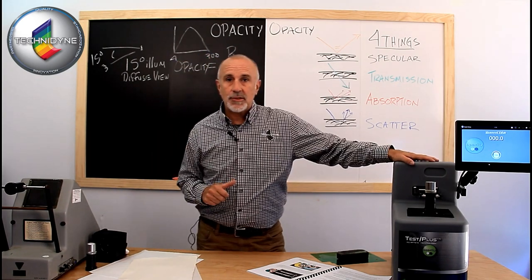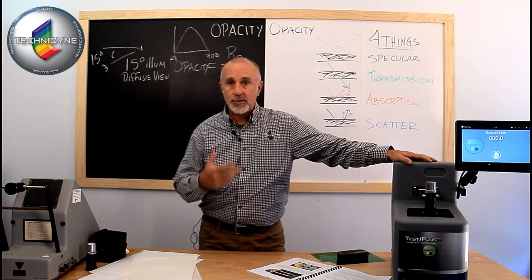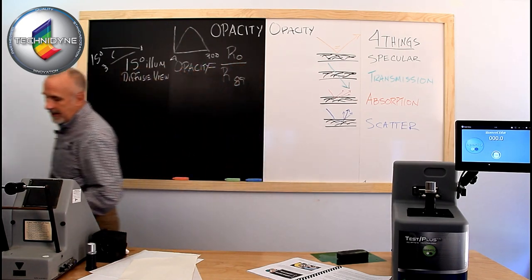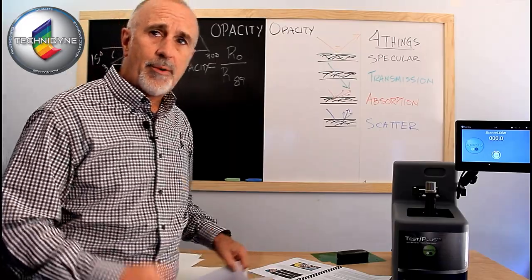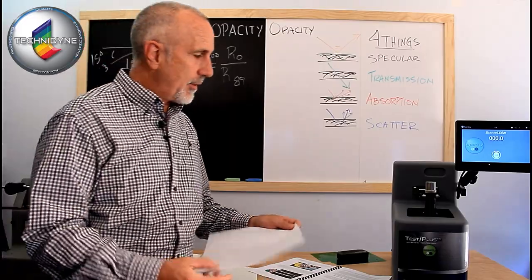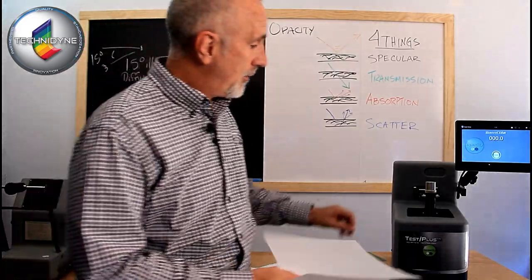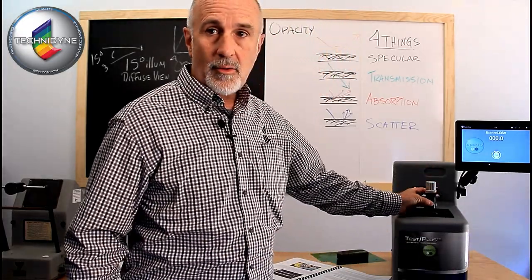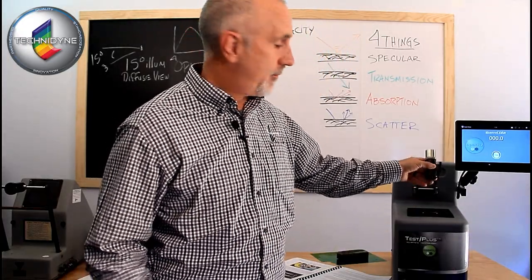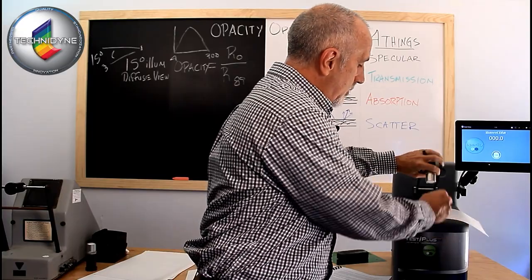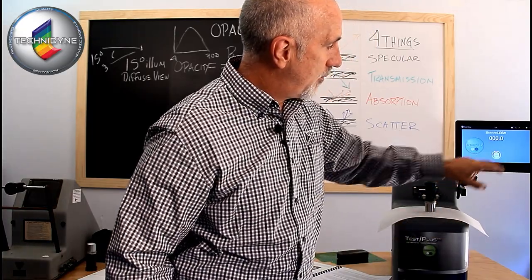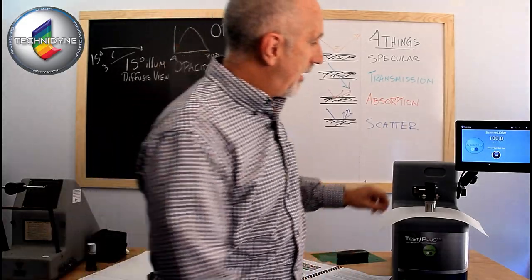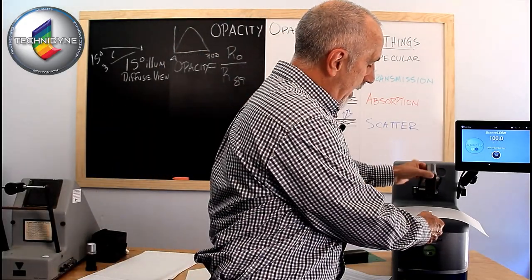But to wrap up this section on TAPPI opacity, let's just look at a couple measurements real quick. Now we had viewed some of these samples up on the board originally, and so if I load this onto the instrument, and I've got my white backing, black backing here, so I'm going to load that. The software instructs me to load the white body, so I'm going to test that, and then after it does that, it says now load the black body.